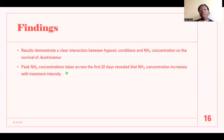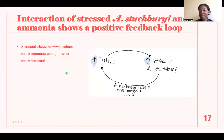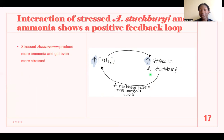Peak ammonia concentrations measured across 32 days revealed that ammonia concentration increases with treatment intensity. The stressed Austrovenus produces more ammonia: as ammonia concentration increases, the organism gets more stressed, and as it gets more stressed, it excretes more ammonia waste, which then enters the water and further increases ammonia concentration. This is a positive feedback loop.